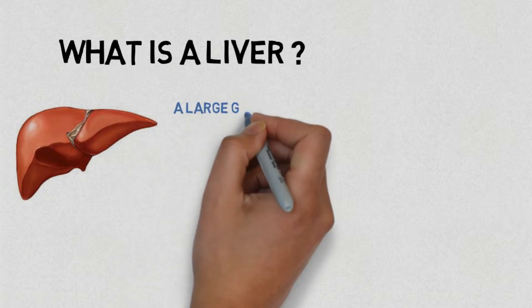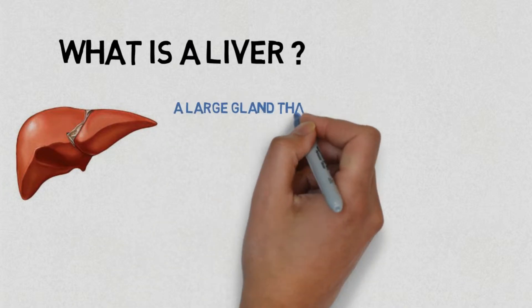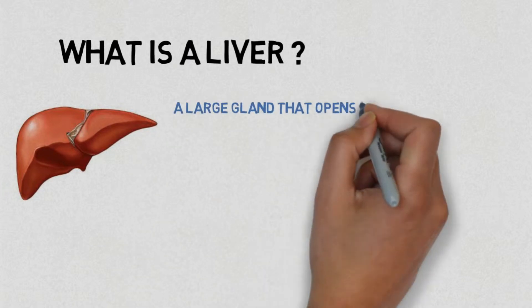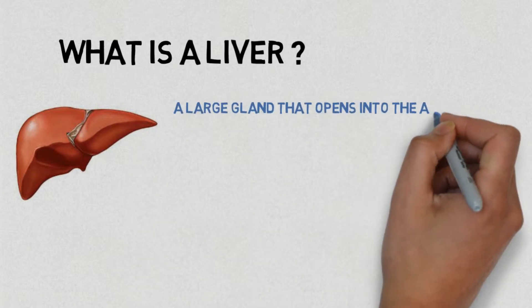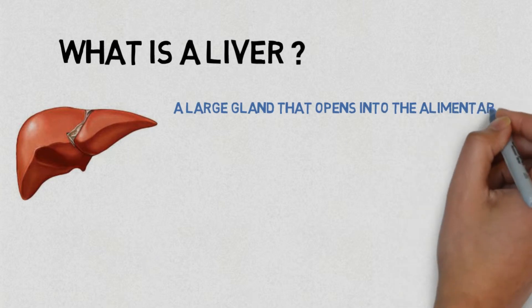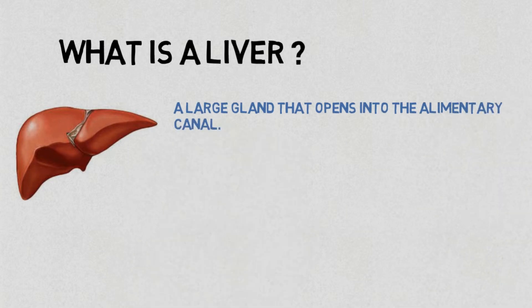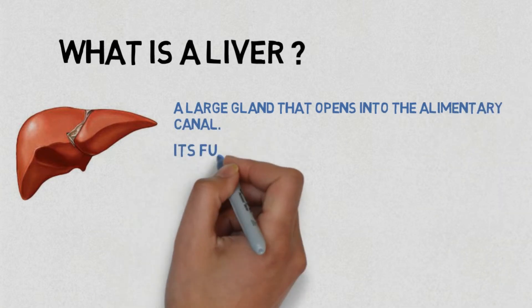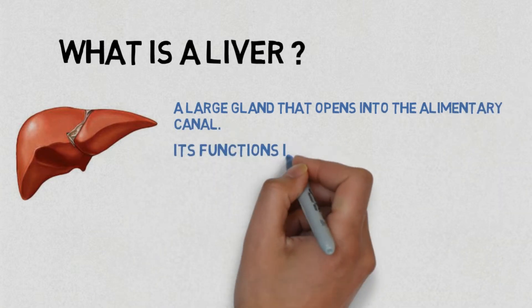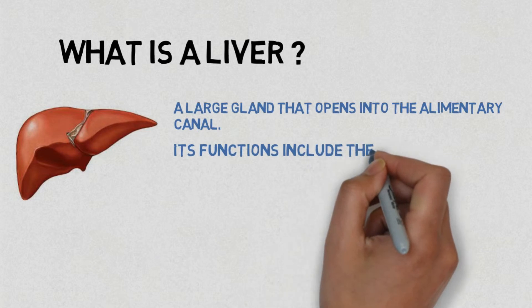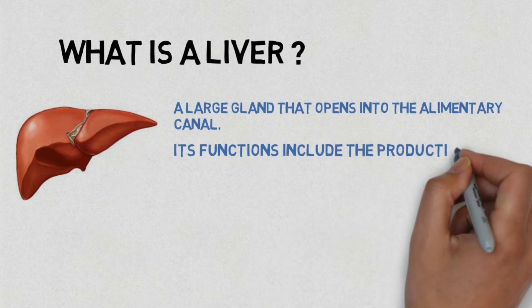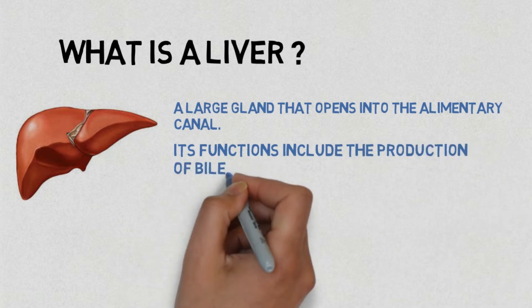A large gland that opens into the alimentary canal. Its functions include the production of bile and the breaking down of proteins to form urea.